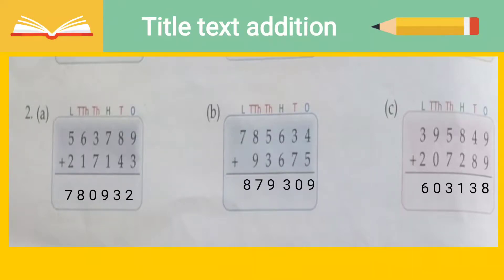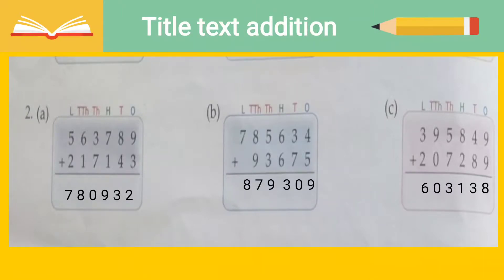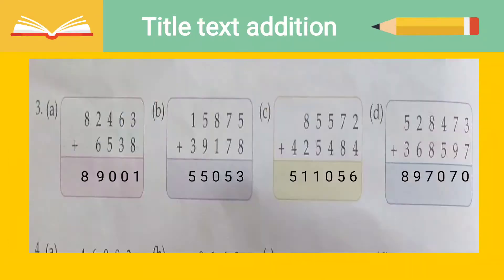Now for part B: we have 785,634 and we have to add 93,675. Four plus five is nine. Seven plus three is ten — one carry forward. Six plus six is twelve, plus one is thirteen — one carry forward. Five plus three is eight, plus one is nine. Then nine plus eight is seventeen — one carry. Eight carry forward. So the final answer is 879,309.